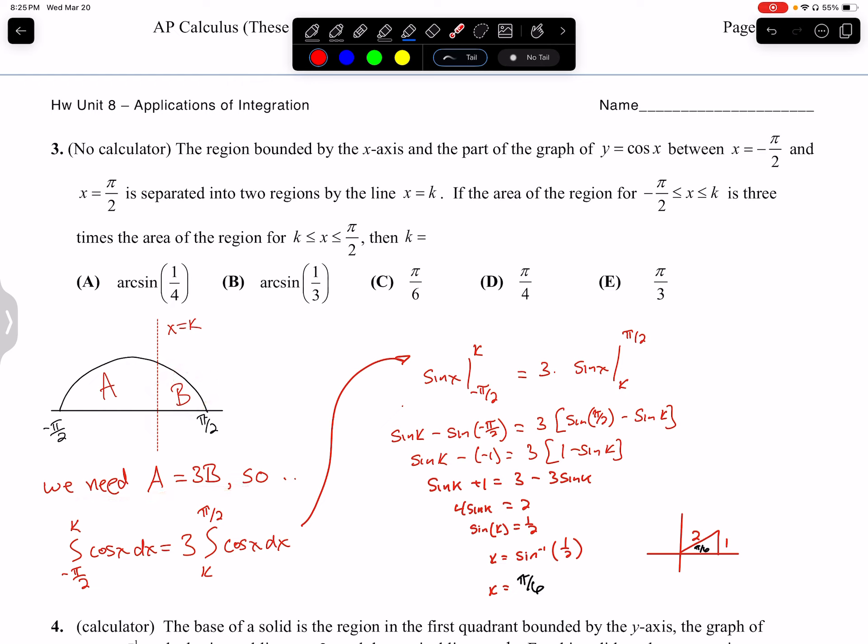Hopefully that makes sense. If it doesn't, you need to stop this video and process that. So to find the area from here to here, it is negative pi over 2 to k. It's the x value, lower and upper bounds of integration, and we're integrating cosine. Over here, this is going to go from k to pi over 2. That's what this is doing. If we, this one's smaller, in order to make these equal, we have to triple this one to make it equal to this. So this is what you're trying to figure out.